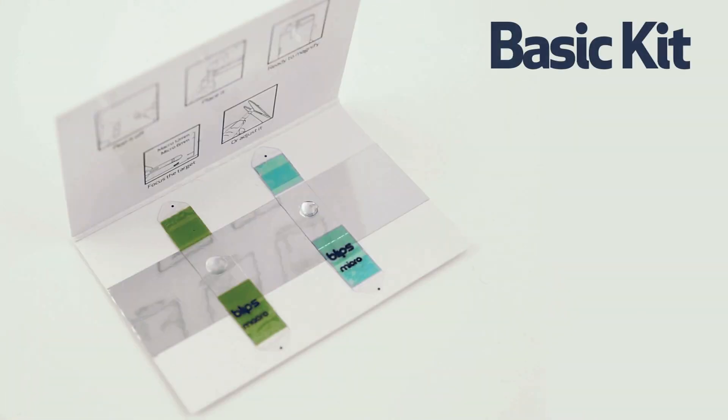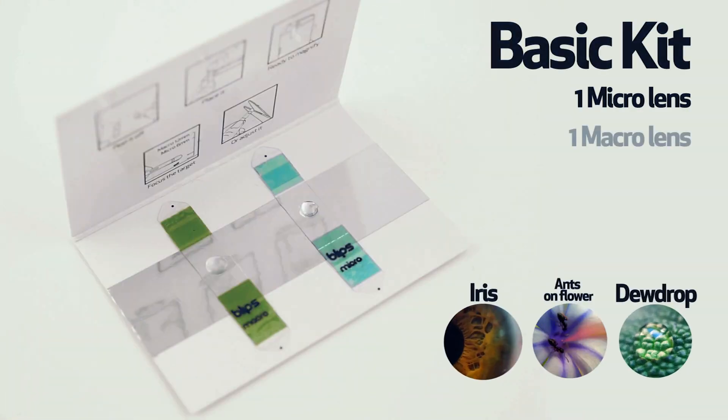Blips offers two main kits. The basic kit, which includes one micro and one macro lens to enjoy both microscopic observation and macro pictures.